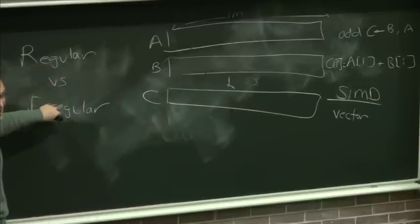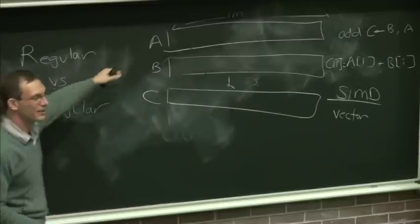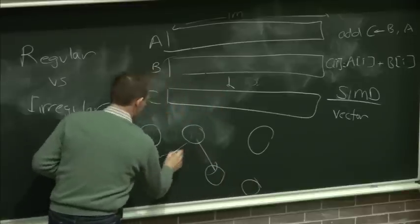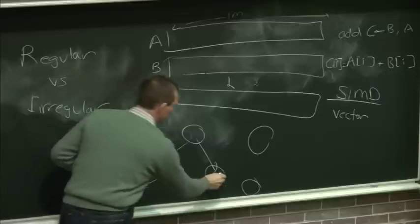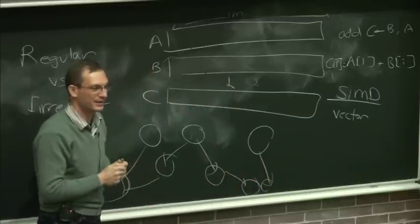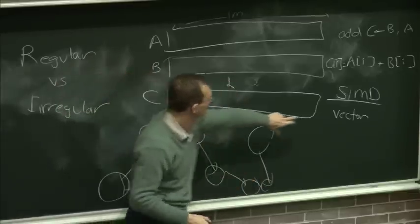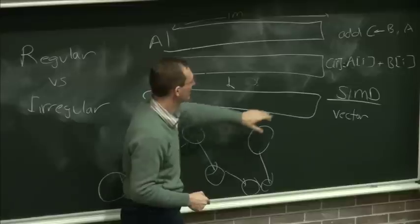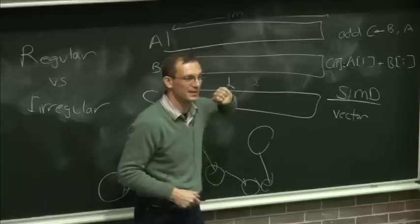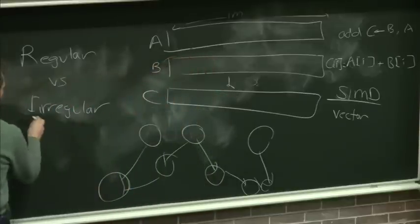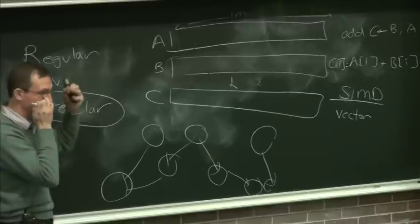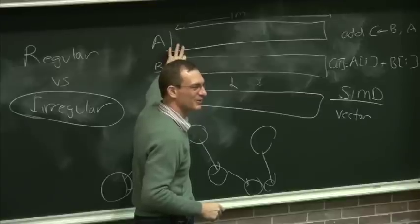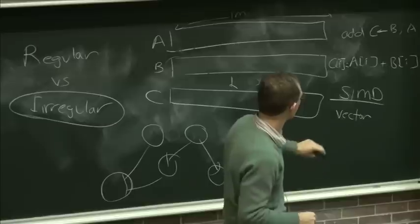Dataflow is the opposite — it can exploit very irregular parallelism. You can have an arbitrary data flow graph with many dependencies, and instructions fire when their data is available. That kind of irregular parallelism is very difficult to exploit in a vector machine. Today's GPUs operate on the same SIMD principle — regular parallelism. We'll contrast dataflow to SIMD and vector machines later.